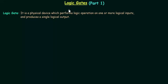In this lecture we will start a new chapter: logic gates. First we will discuss what is a logic gate, then we will move to different types of logic gates available to us. A logic gate is a physical device which performs logic operation on one or more logical inputs and produces a single logical output.